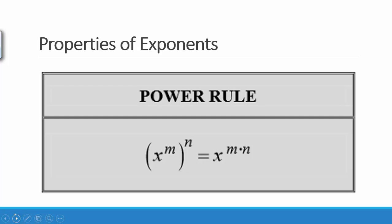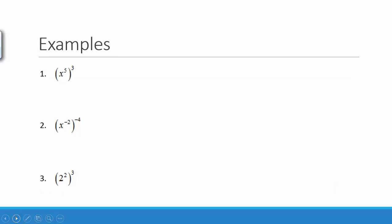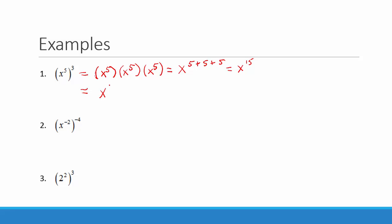Our next property is the power rule: when you have a power raised to another power, you multiply the powers. In our first example, x to the fifth raised to the third — we write x to the fifth multiplied three times. Using the product rule, 5 plus 5 plus 5 equals 15. With the power rule, we multiply the powers: x to the 5 times 3 equals x to the 15.